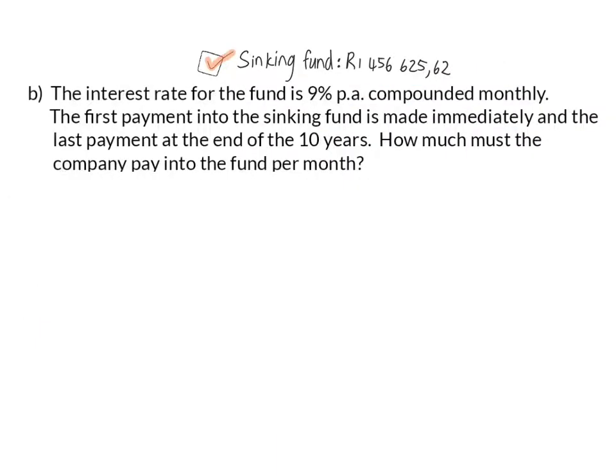Question B: The interest rate for the fund is 9% per annum compounded monthly. The first payment into the sinking fund is made immediately and the last payment at the end of the 10 years. How much must the company pay into the fund per month?